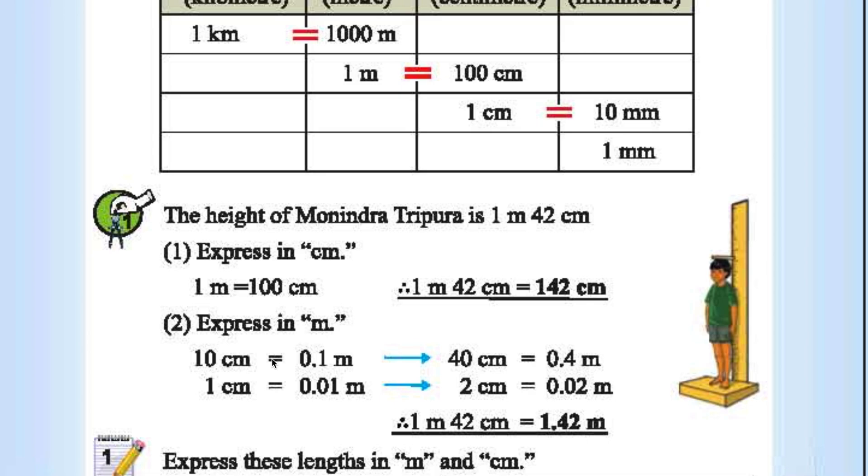Express in meters. 10 centimeters is 0.1 meters. 1 centimeter is 0.01 meters. So it will be 1.42 meters. 42 centimeters is nothing but 0.42 meters. Total 1.42 meters.